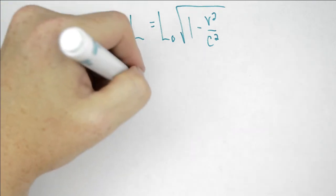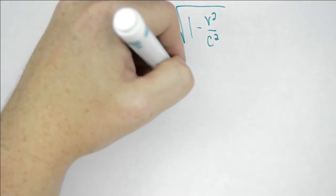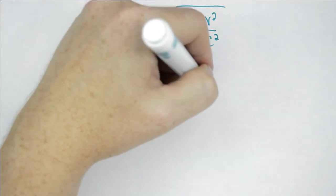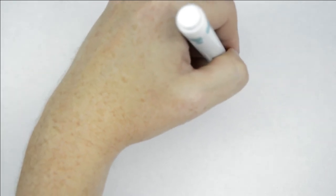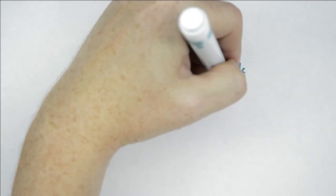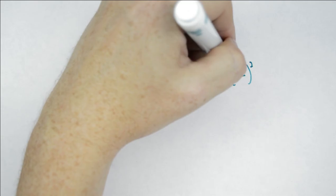We have the equation L equals L0 multiplied by the square root of 1 minus v squared over c squared. This is the same term we've seen before with time dilation, except now it's in the numerator instead of the denominator.